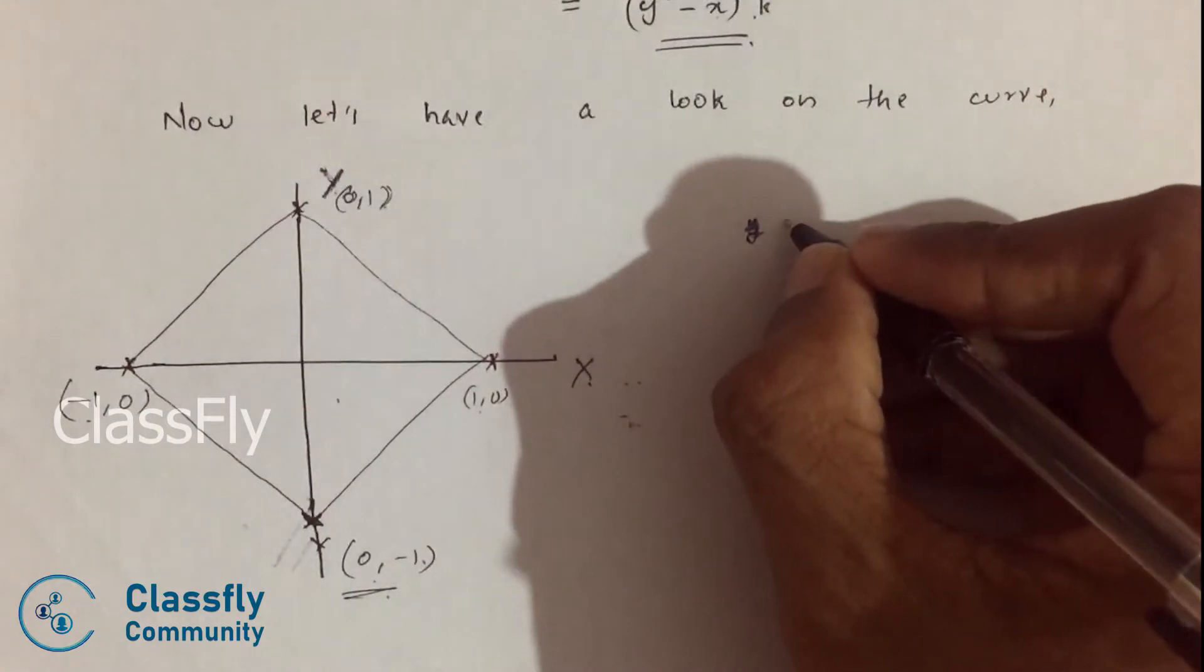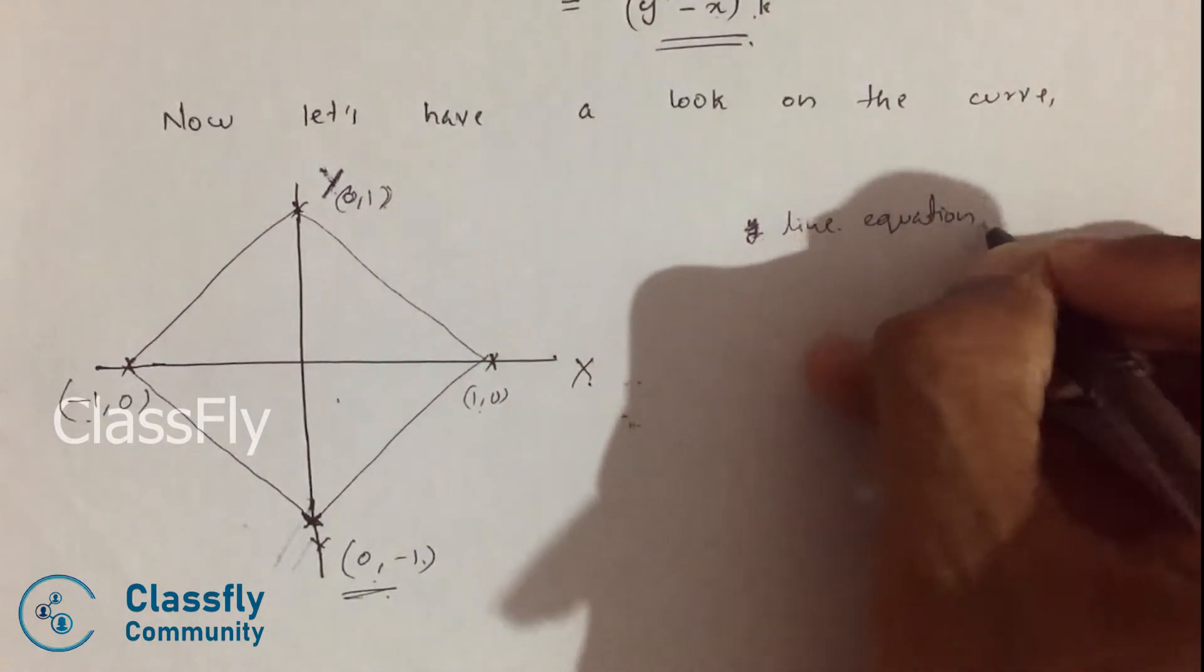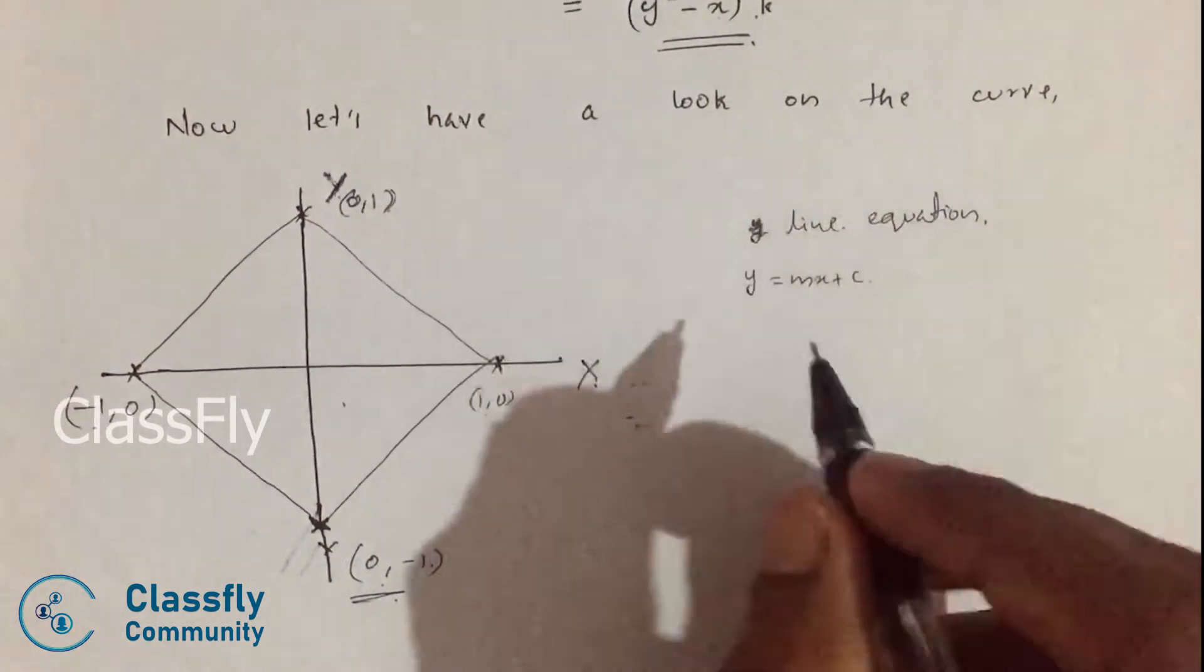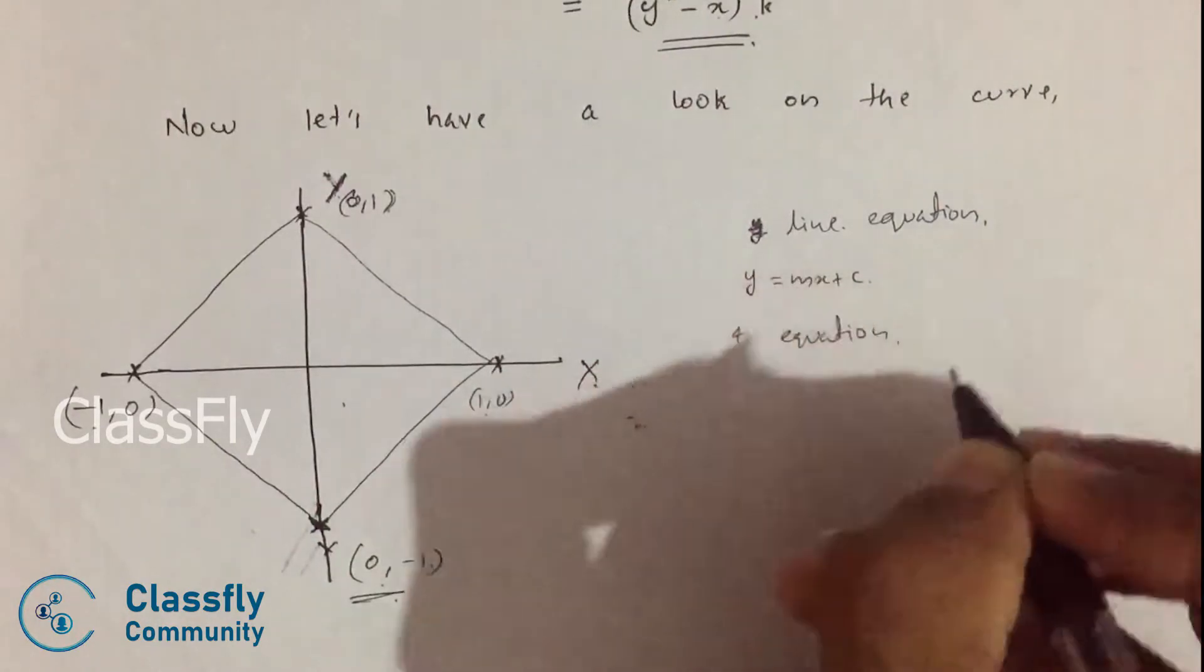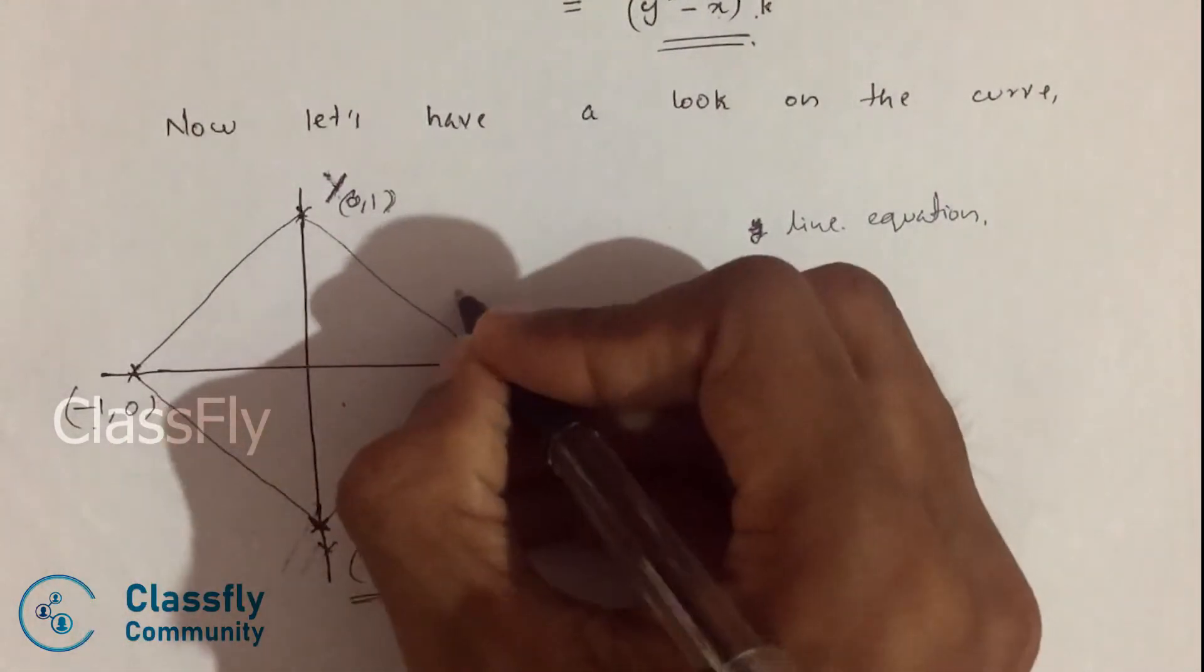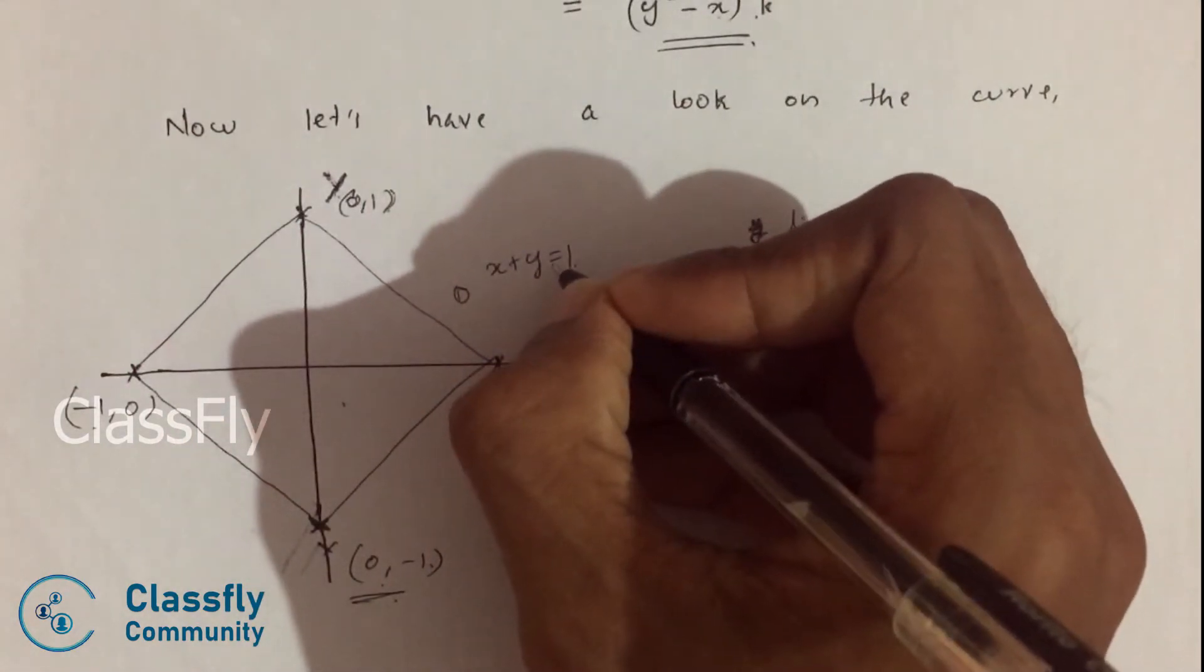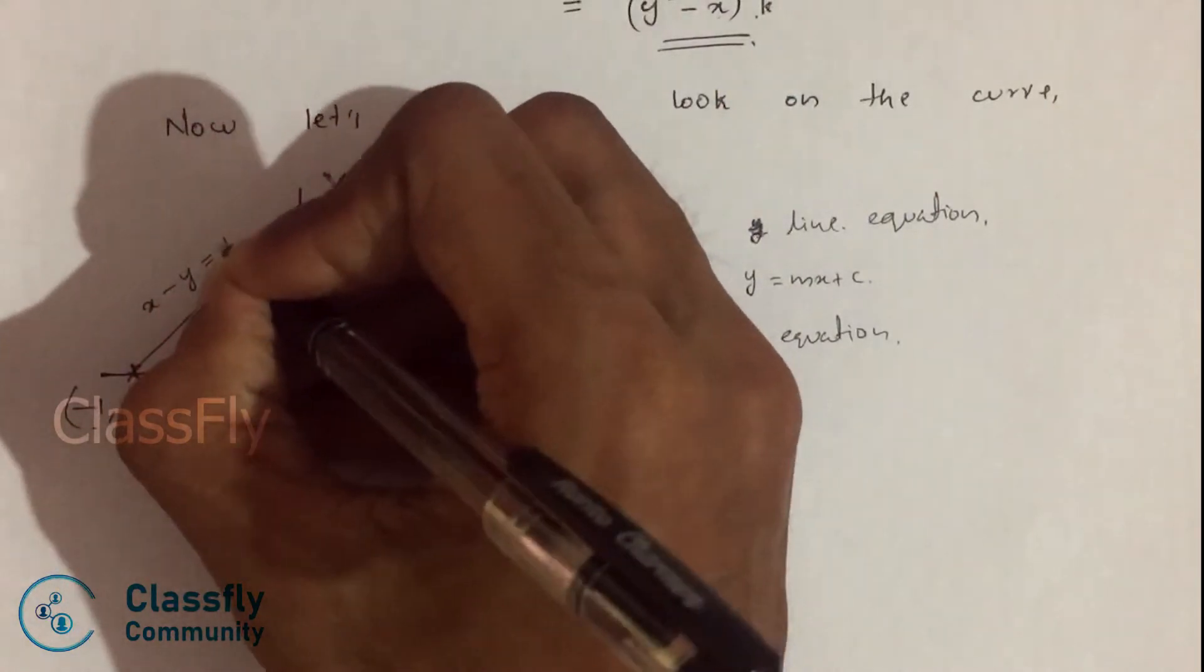And now using the line equation y equals mx plus c, we can form four equations. That is, one over here: x plus y equal to 1. Here it's x minus y equal to 1.